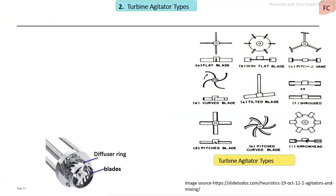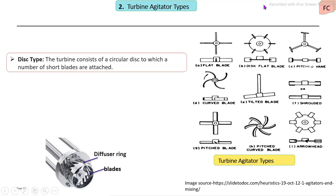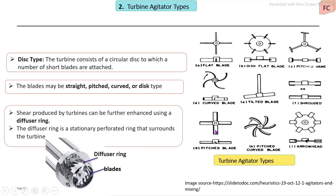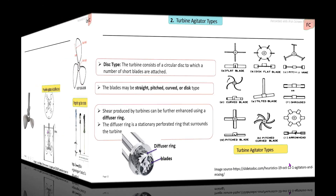Turbine agitator types include flat type, disc type, curved type, disc with blades, curved type with pitch, and straight type with pitch. To produce more shearing force, the turbine can be externally provided with a diffusing ring — a stationary perforated ring around the central shaft and blades — which produces more shearing and turbulence forces during mixing operations.